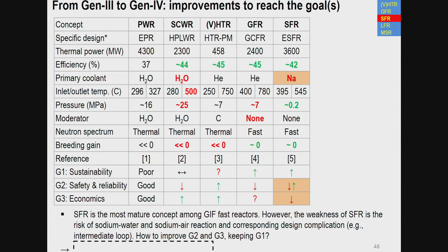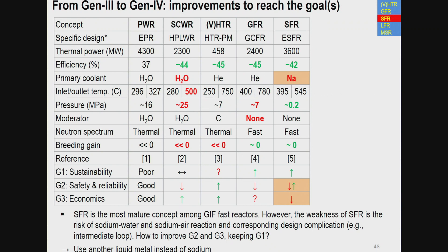The SFR is the most mature concept among Generation 4 fast reactors. However, the key weakness remains the risk of sodium-water and sodium-air reactions and the corresponding design complications, such as the intermediate loop. The question is how to improve safety, reliability, and economics while maintaining sustainability. The answer proposed by experts is to consider another liquid metal: either lead-bismuth or lead. In the Generation 4 International Forum, the reference system is the lead-cooled fast reactor (LFR).